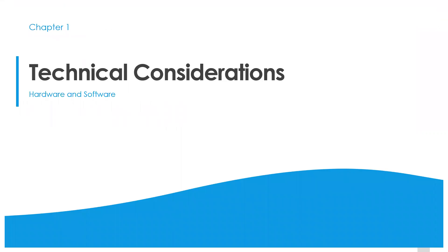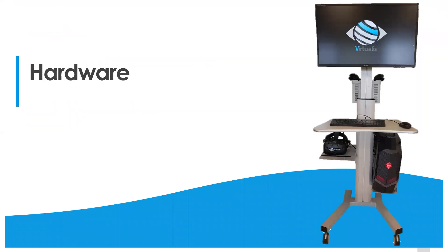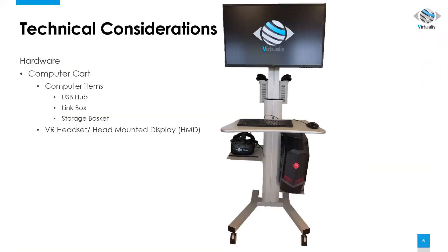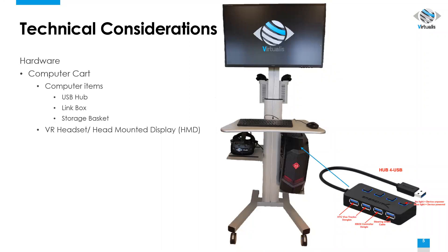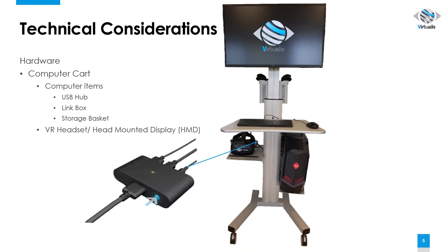Let's begin with the technical considerations and we'll start with the hardware. Your Virtualis hardware includes the computer cart, to which the following items are attached. Your USB hub is a 4-port USB hub that is typically attached to the computer tower. On the left-hand side of your system, where the virtual reality headset is, you'll find the link box. This link box connects your virtual reality headset with the computer.